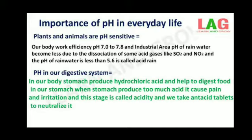When the pH of rainwater is less than 5.6, it is called acid rain. When acid rain flows into the rivers, it lowers the pH of the river water and the survival of aquatic life in such rivers becomes difficult.